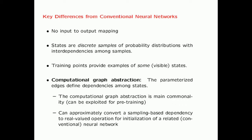This similarity with conventional neural networks can be exploited for pre-training of conventional neural networks. The idea is that one can approximately convert a sampling-based dependency to a real-valued operation for initialization of a related conventional neural network. Even though restricted Boltzmann machines are fundamentally different from conventional neural networks, they are used for initialization of conventional neural networks, and this gave a lot of prominence to the area of restricted Boltzmann machines.